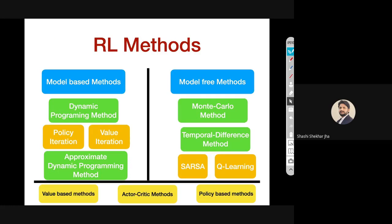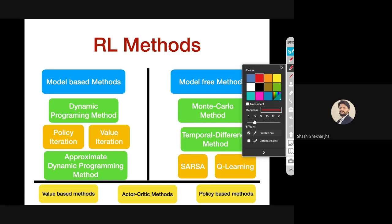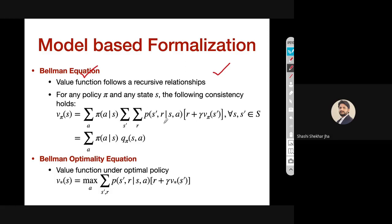This slide lists all possible RL methods for solving those Bellman equations. There are two broad approaches: model-based methods and model-free methods. In model-based methods, we assume we have the transition function — if you are in state S and take action A, we know what happens next.